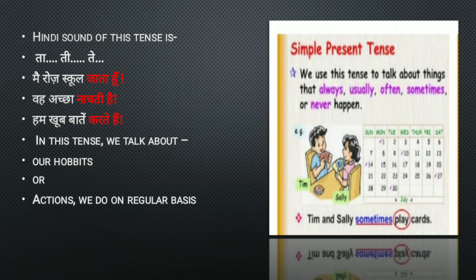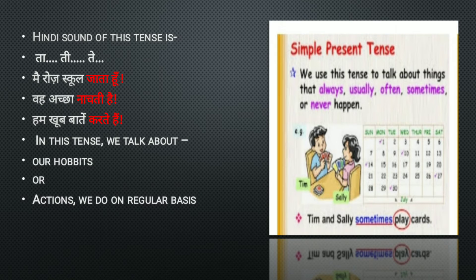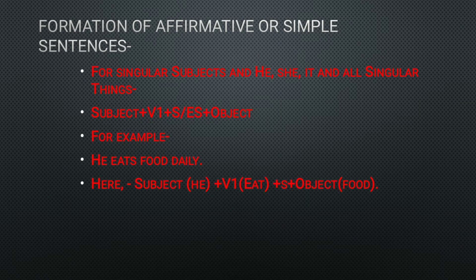The sound of this tense in Hindi is 'ta,' 'ti,' and 'te.' Some Hindi example sentences are: 'main roj school jaata hoon,' 'vahe achcha naashta karta hai,' 'hum khub baat karte hain.' In this tense we always talk about habits or actions done on a regular basis. We use this tense for things we do always, usually, often, sometimes, or never. For example: 'Tim and Sally sometimes play cards.'